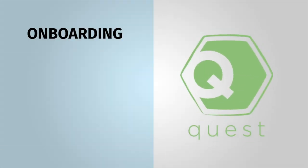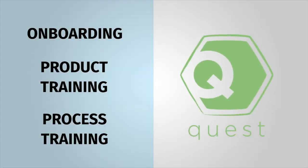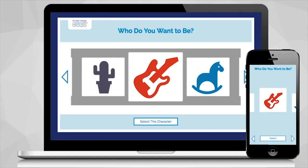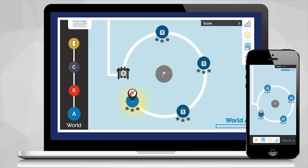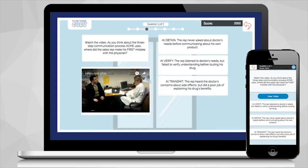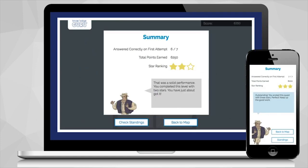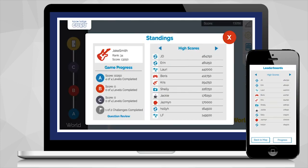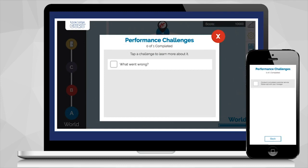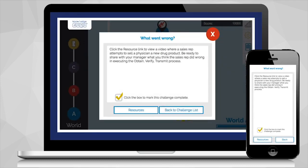The Quest app is used for onboarding, product, and process training. Learners choose a character and try to earn a three-star rating on each game topic. As they answer questions, learners earn points and power-ups, compete on leaderboards, and complete performance challenges that connect training to the workplace.